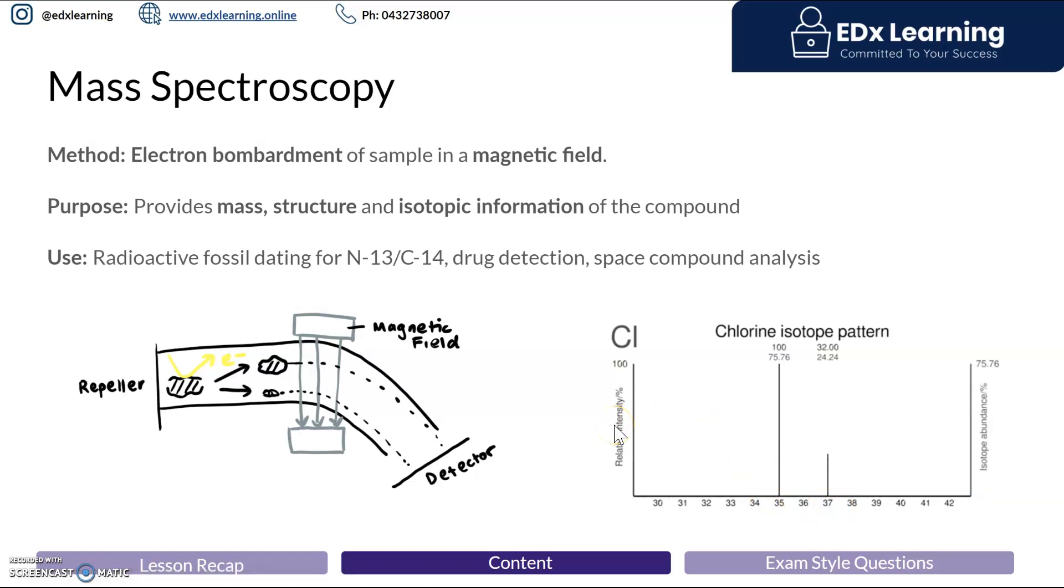This is how we find the atomic mass units or molar mass for an element on the periodic table. Since mass spec provides isotopic information, we can use it in radioactive fossil dating, in drug detection where drugs are metabolized and there's different isotopes of that drug, and in space compound analysis where we have foreign elements in different isotopes.